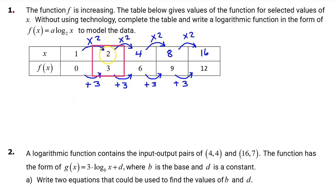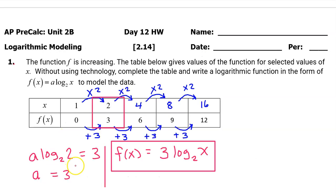At an input value of 2, the output value should be 3. So that means a times the log base 2 of 2 should equal 3. The log base 2 of 2 is 1, because 2 to the 1 power is 2. So this is a times 1, which is simply a, so a is equal to 3. Substituting this value of a back into the model gives us f(x) = 3·log₂(x).